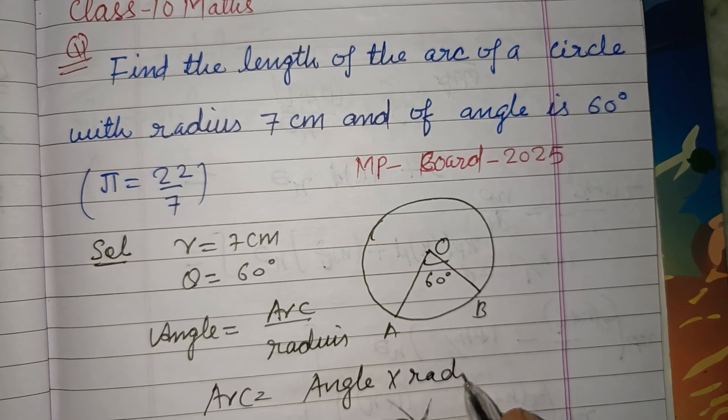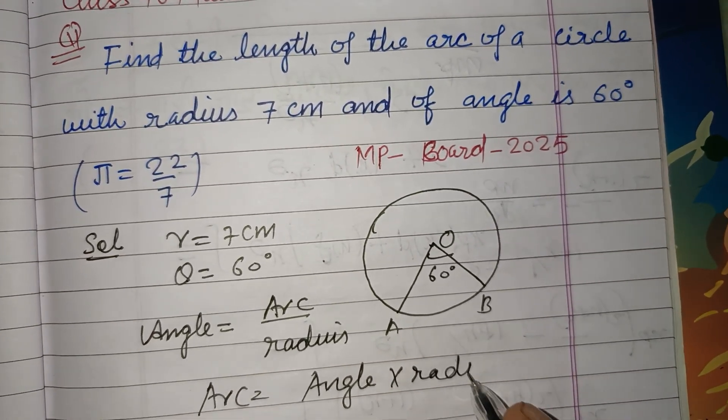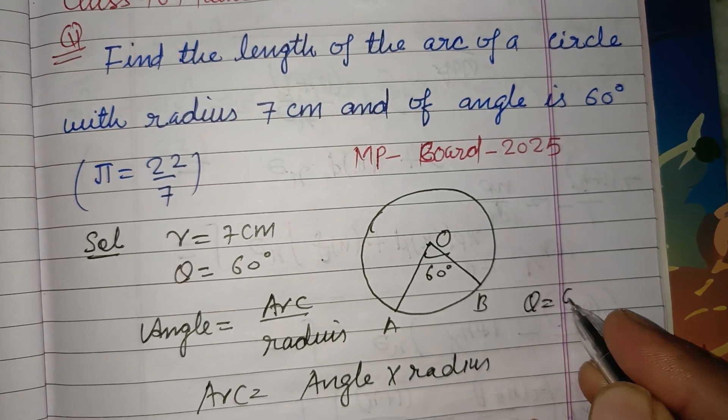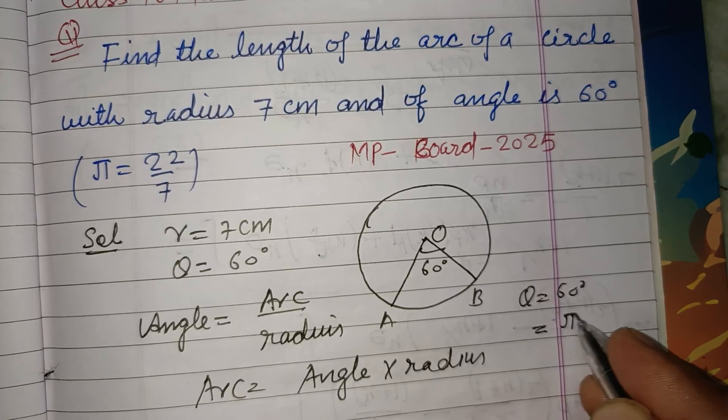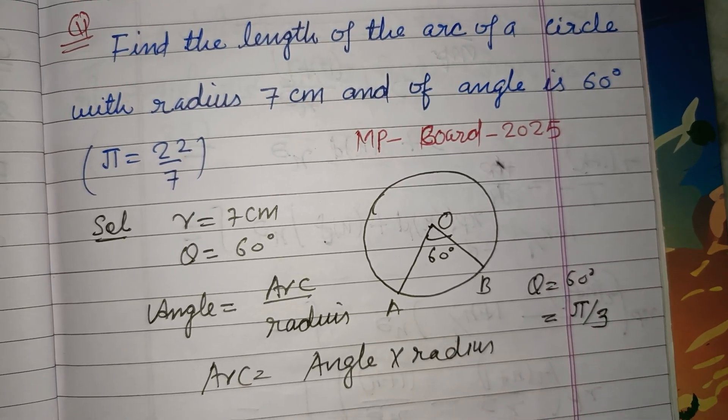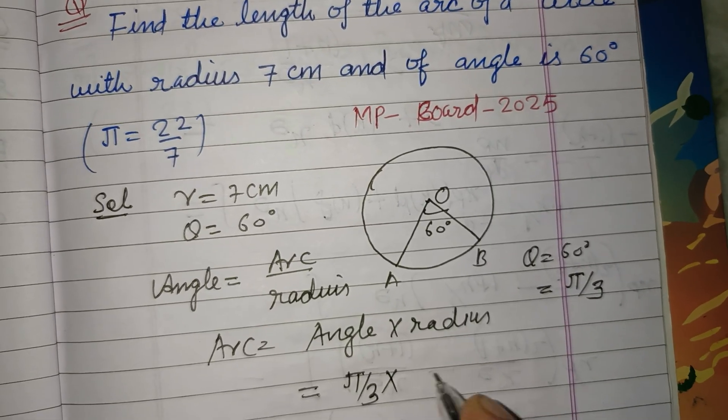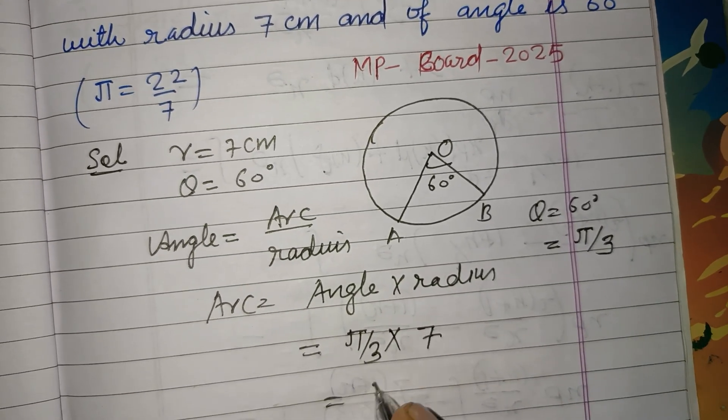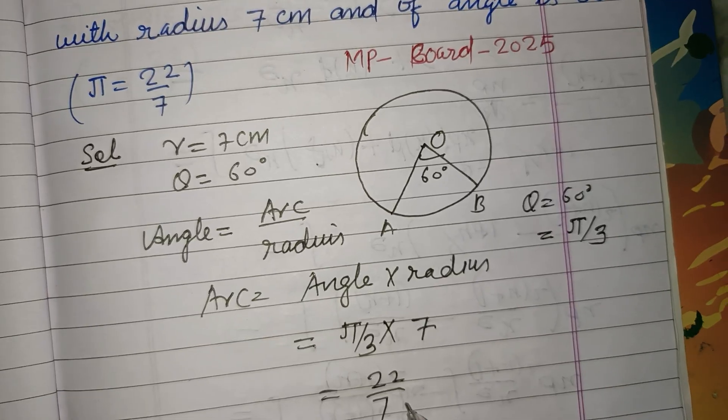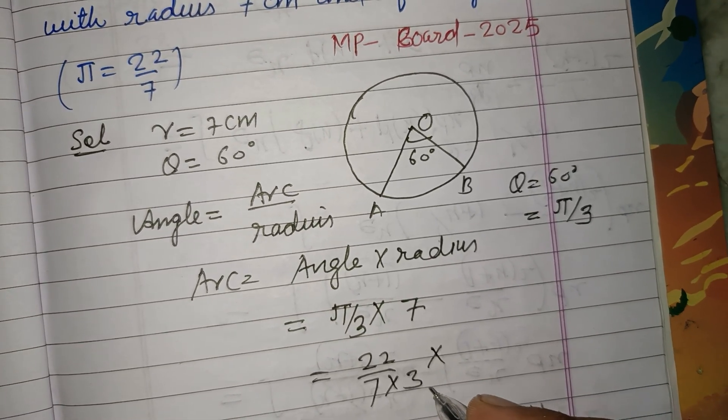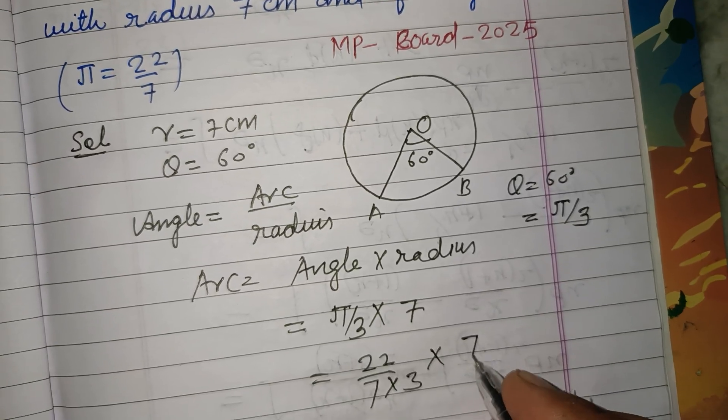And angle is theta, that is 60 degrees. We write it as pi by 3, so pi by 3 into radius is 7, and value of pi is 22 over 7 into 3 into 7.